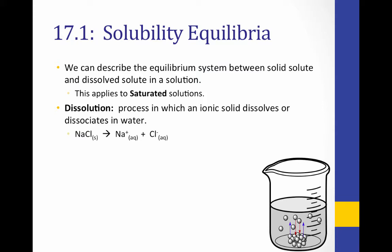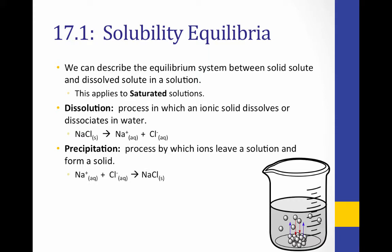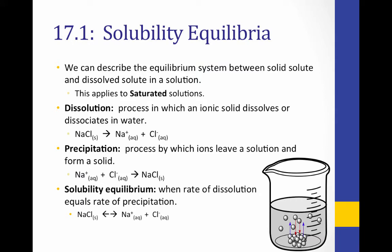Solubility equilibria looks at the opposite processes of dissolution and crystallization. Dissolution is the process in which an ionic solid dissolves or dissociates in water, represented by the blue arrows in the beaker. Precipitation, or crystallization, is the process by which ions leave a solution and form a solid, represented by the red arrows. When the rate of dissolution equals the rate of precipitation, we have an equilibrium system.